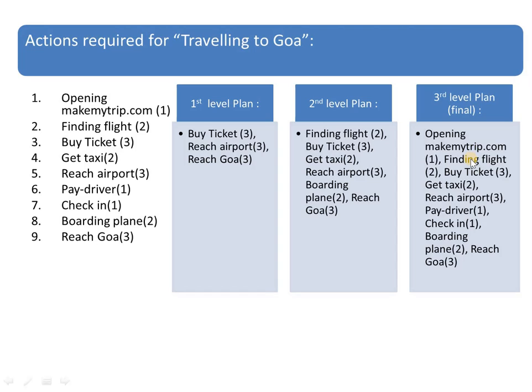In the last level plan — the third level — all these elements together with some other points will be added. Before buying a ticket, what I have to do is: open the ticket booking website, find the flight, buy the ticket for the flight, get a taxi, reach the airport, pay the driver, check in, board the plane, and reach Goa. So this third level gives more detailed information about each action.